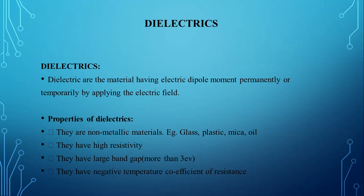Let us see some properties of dielectrics. They are non-metallic materials. Examples: glass, plastic, mica, oil. They have high resistivity. They have a large band gap, that is more than 3 electron volts. They have a negative temperature coefficient of resistance — that is, when temperature increases, the resistance of the material decreases.